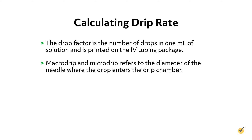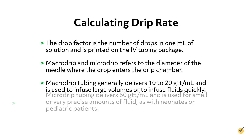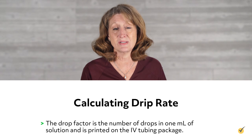Macro drip and micro drip refers to the diameter of the needle where the drop enters the drip chamber. Macro drip tubing generally delivers 10 to 20 drops per milliliter and is used to infuse large volumes or to infuse fluids quickly. Micro drip tubing delivers 60 drops per milliliter and is used for small or very precise amounts of fluid, as with neonates or pediatric patients.